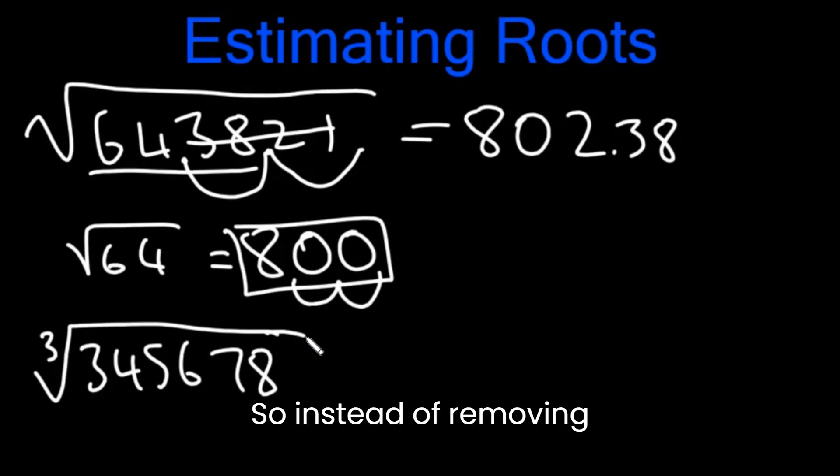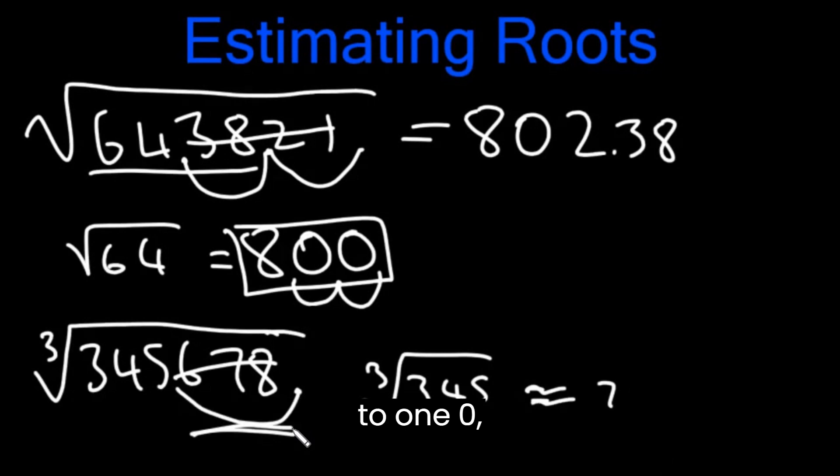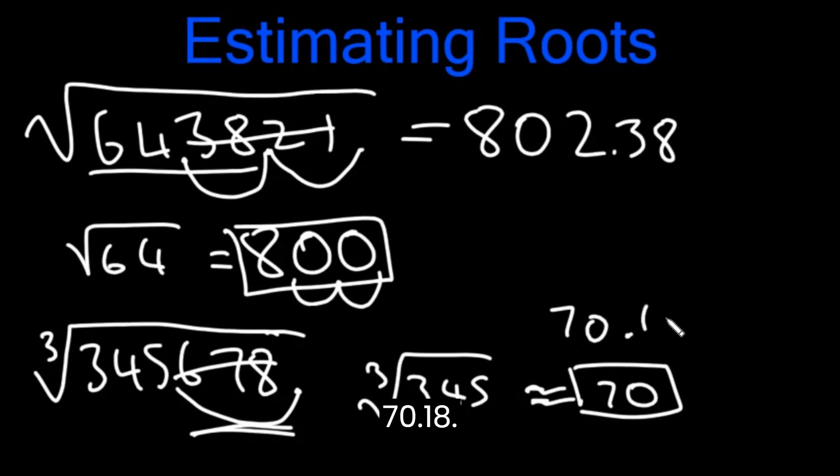So instead of removing pairs of digits, we're going to remove triples of digits. We're going to remove three digits at a time. And so we disregard this. We have cube root of 345. Now if you've memorized your cubes, then you should know that 7 cubed is 343. So this is around 7. Now we removed three digits. That corresponds to 10. The actual answer would have been 70.18.